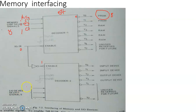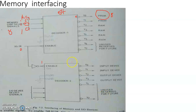The IO decoder's device-select signals are supplied with the most significant three bits of the address bus. Depending on the address bus status from 0-0-0 to 1-1-1 (zero to seven), one of up to eight IO devices can be enabled. For example, input device one is connected to Y0, input device two to Y1, output device one to Y2, and output device two to Y3.